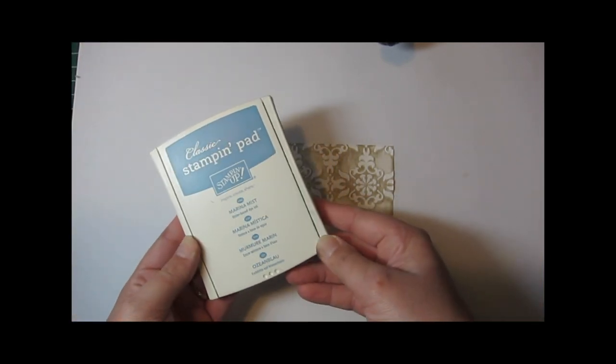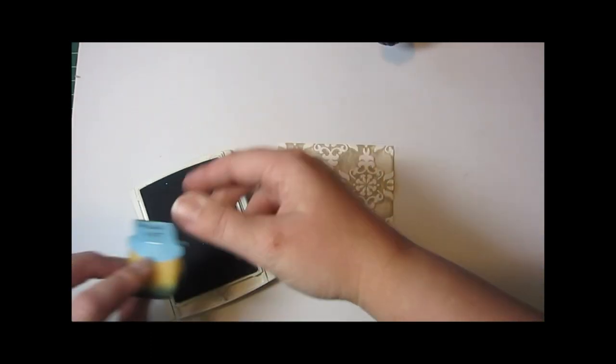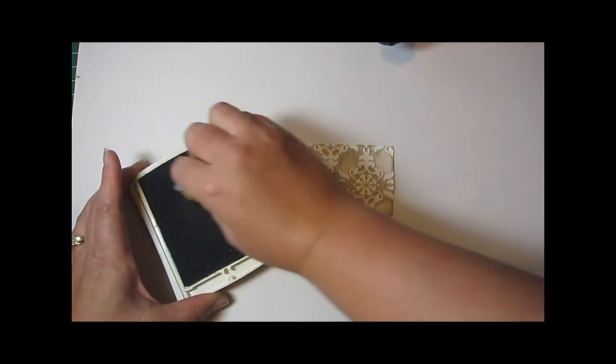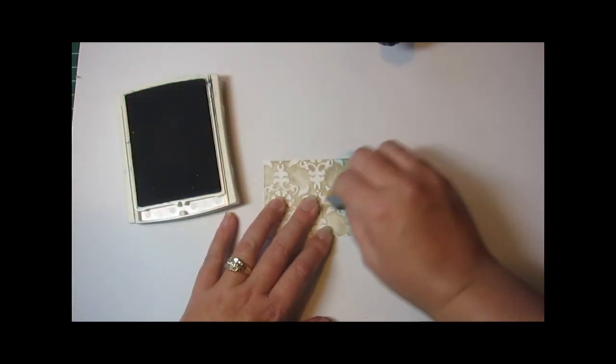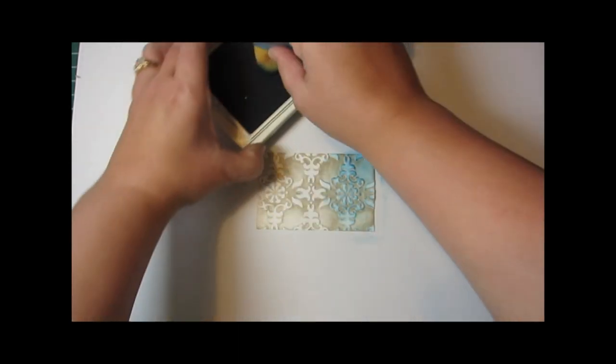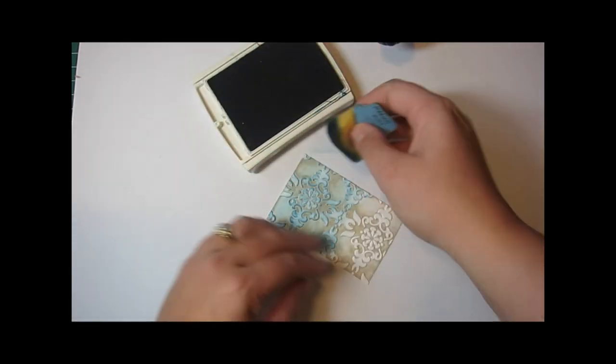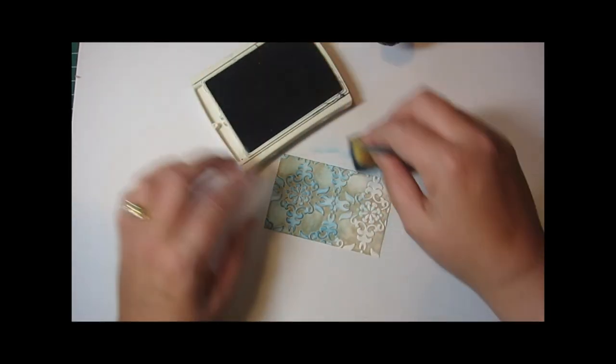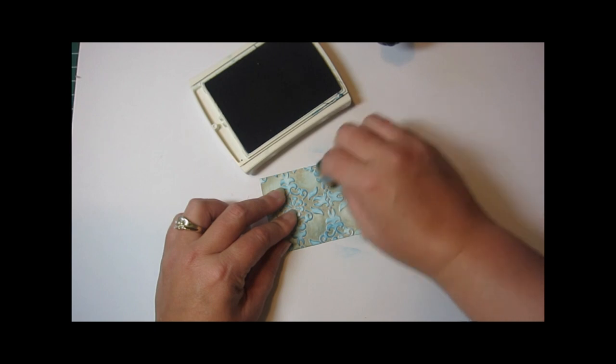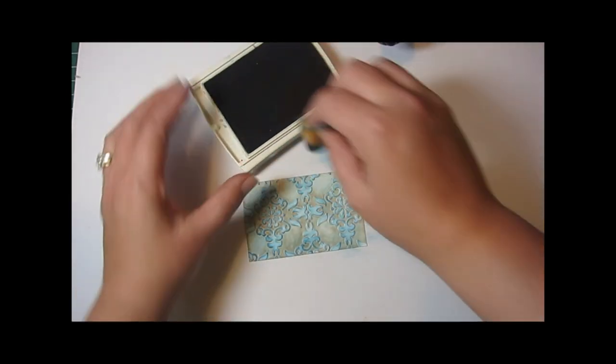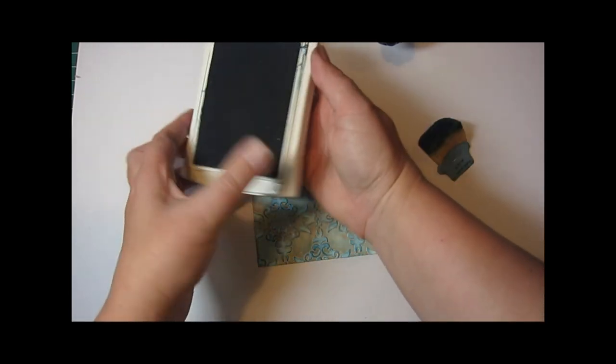Next we're going to take the Marina Mist and you can use any kind of a medium color ink. If you want the traditional patina look you want to try to stick with a blue and a green. I'm just going to start sponging over the top of the raised portions and you can just kind of do this randomly. You don't have to do really dark coverage over the whole thing but I like to focus on the raised areas. Those are the ones that you really want the texture to pop. So there is the first layer.